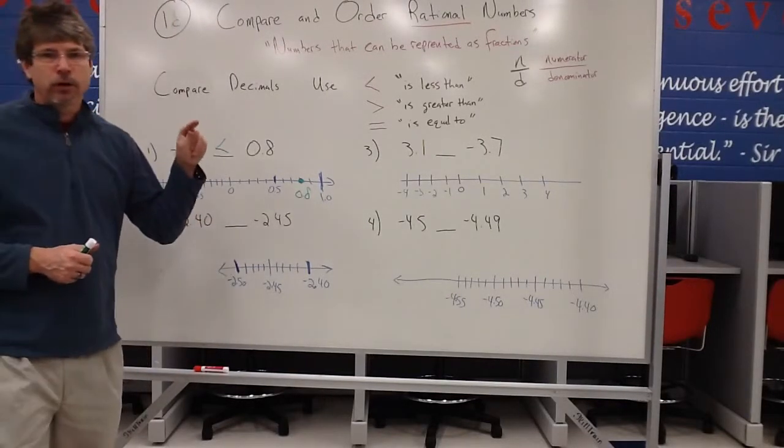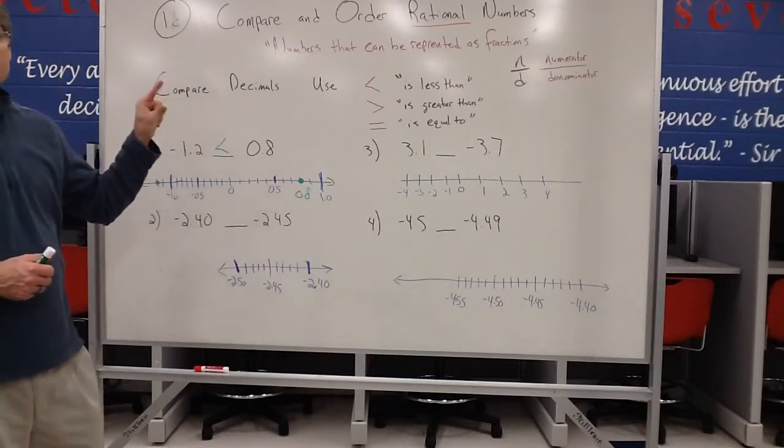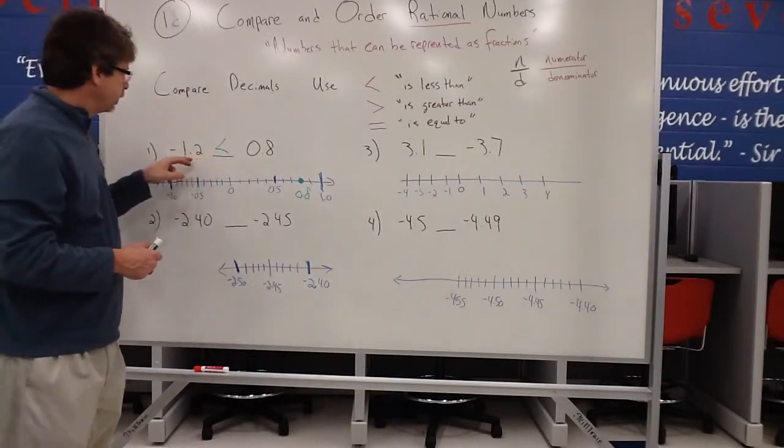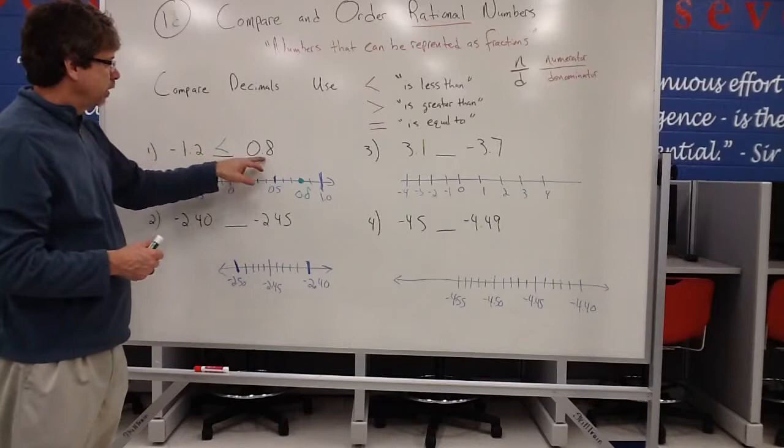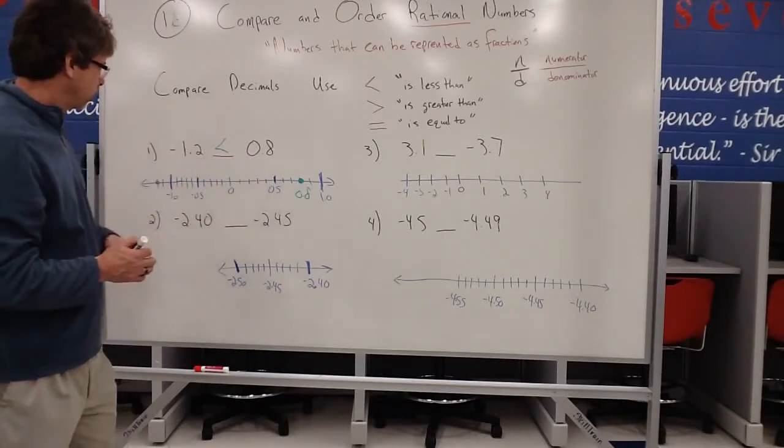And remember, it's like a little alligator mouth. It always kind of eats the bigger value. But it's actually negative 1.2 is less than 0.8. That would be our example.